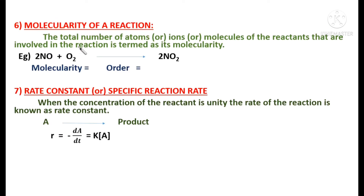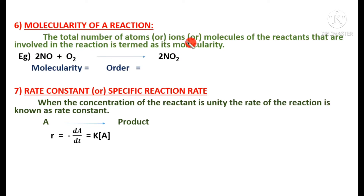Next is the molecularity of a reaction. Molecularity is the total number of atoms, ions, or molecules of the reactants that are involved in the reaction. For example, for the preparation of nitrogen dioxide from nitric oxide: 2NO + O₂ → 2NO₂. There are two molecules of nitric oxide and one molecule of oxygen, so molecularity = 2 + 1 = 3.